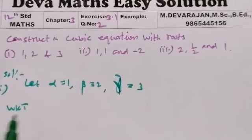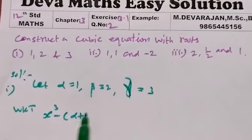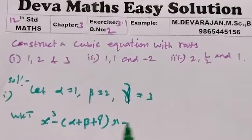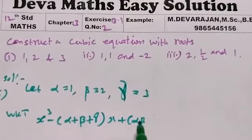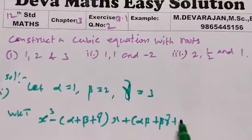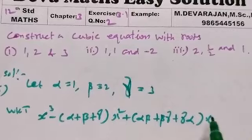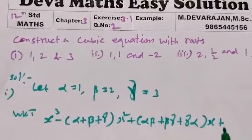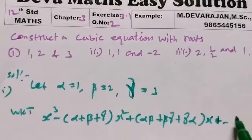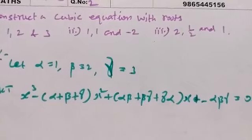The general form of a cubic polynomial is x³ minus (alpha + beta + gamma)x² plus (alpha·beta + beta·gamma + gamma·alpha)x minus alpha·beta·gamma equal to 0.